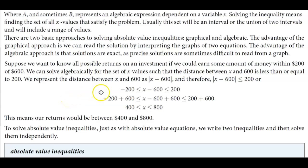We represent the distance between x and 600 as |x - 600|, and therefore |x - 600| ≤ 200.